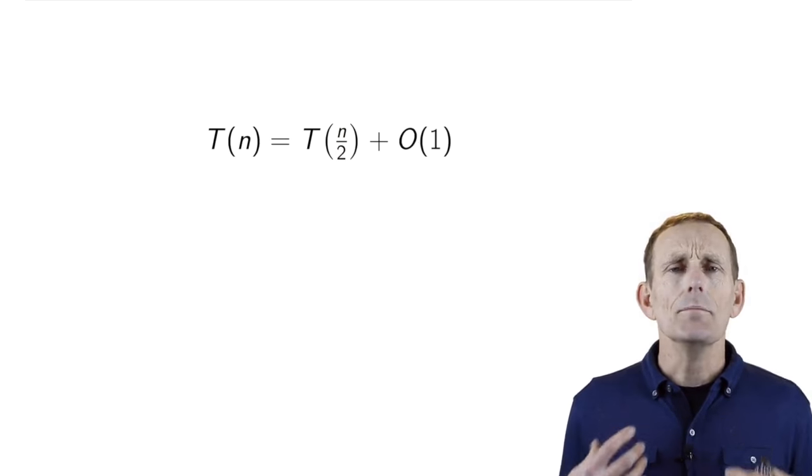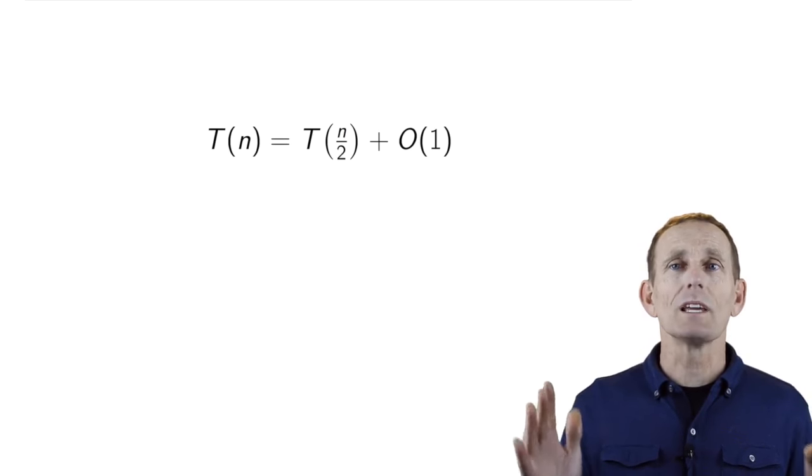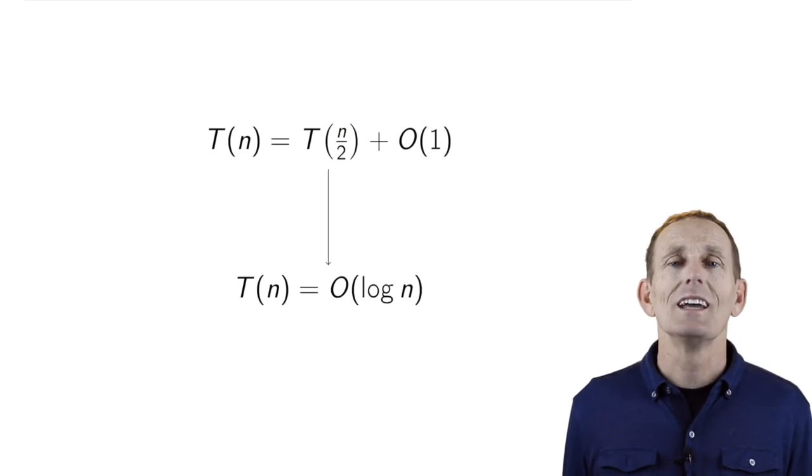We've had many occasions where we have had to write a recurrence relation for a divide-and-conquer problem. This is an example of one for binary search. We break a problem down into a problem half as big, and we do a constant amount of work at each level, and this gives us a solution: T(n) equals big O of log n.